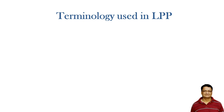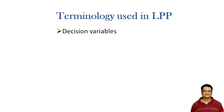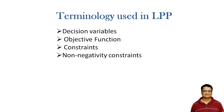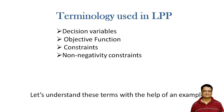Before we actually formulate the LPP, it is useful to know some of the terminology used in the linear programming problem. The key terms are: decision variables, objective function, constraint, and non-negativity constraint. Let us understand these terms with the help of an example.